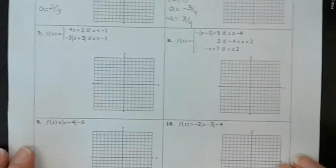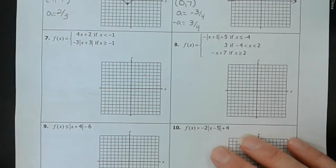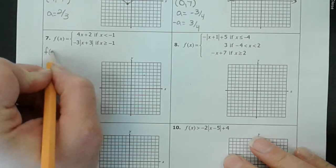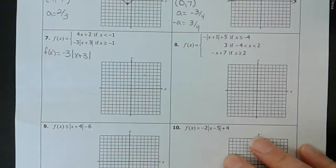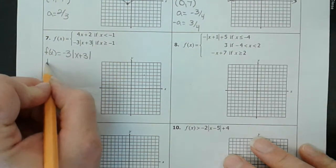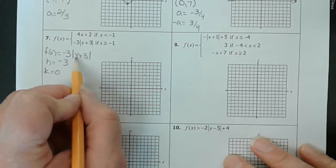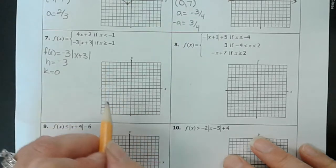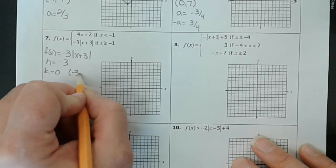Now let's get into these piecewise functions, because I know they scare you a little bit. So this is what you do: graph each function, decide what you're going to keep, decide what you're not going to keep. So let's graph the absolute value function first — that's f(x) equals negative 3 times the absolute value of x plus 3. Our h is equal to negative 3 and our k is equal to 0, because x minus negative 3 is x minus h. So our vertex is at negative 3, 0.